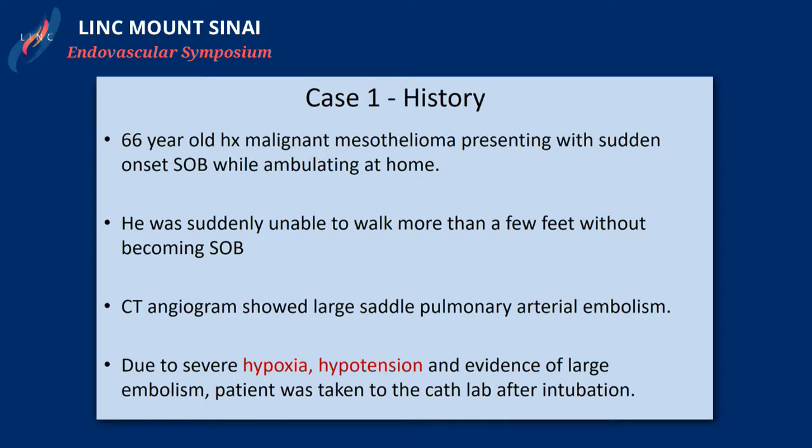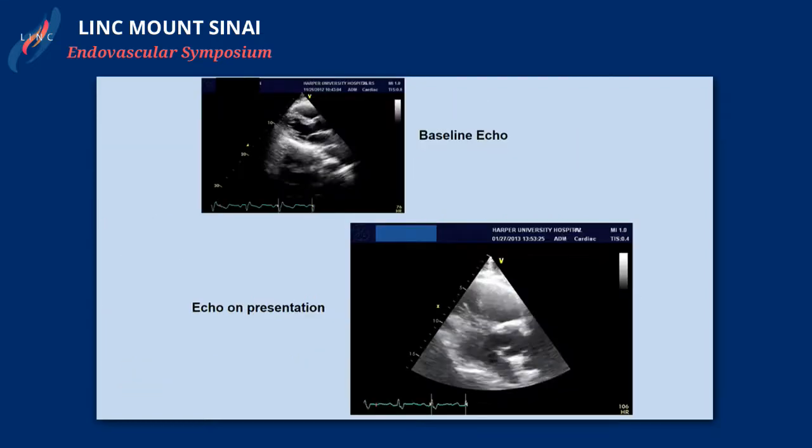The first case is a 66-year-old patient who presents with sudden shortness of breath, previously ambulatory at home, unable to walk for a few feet, becoming progressively shorter of breath. The CT scan showed a large saddle embolism, and the patient was obviously hypoxic, hypotensive, and was taken to the cath lab after being intubated in the ER.